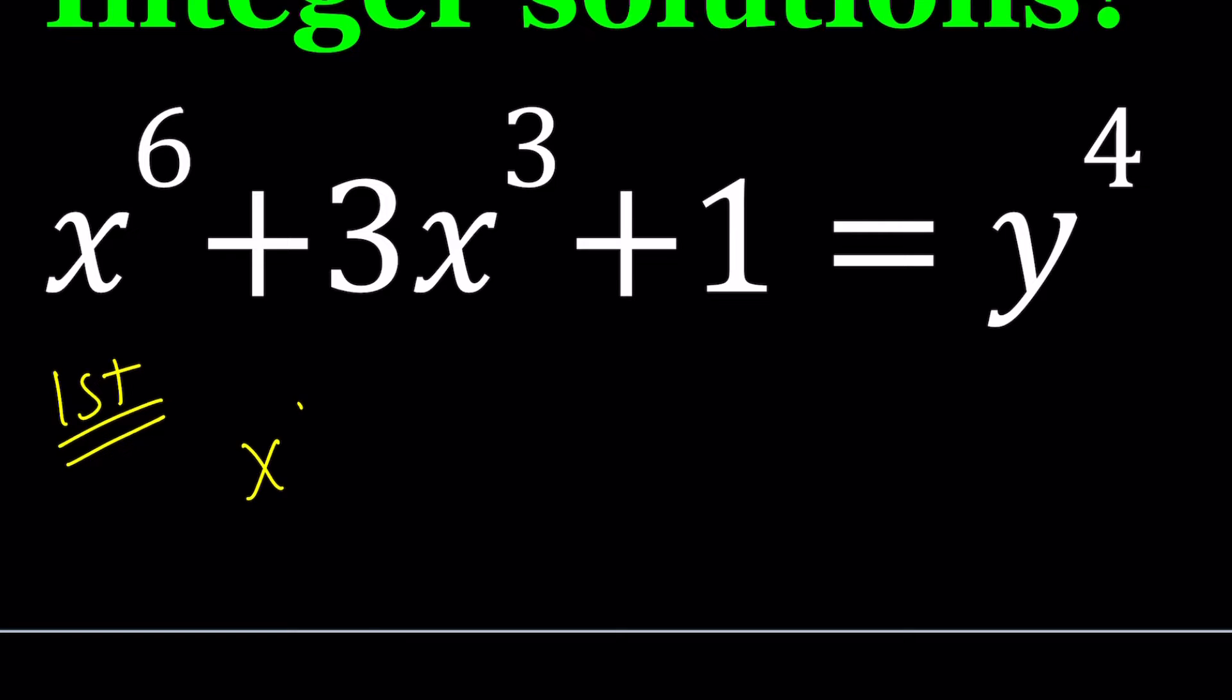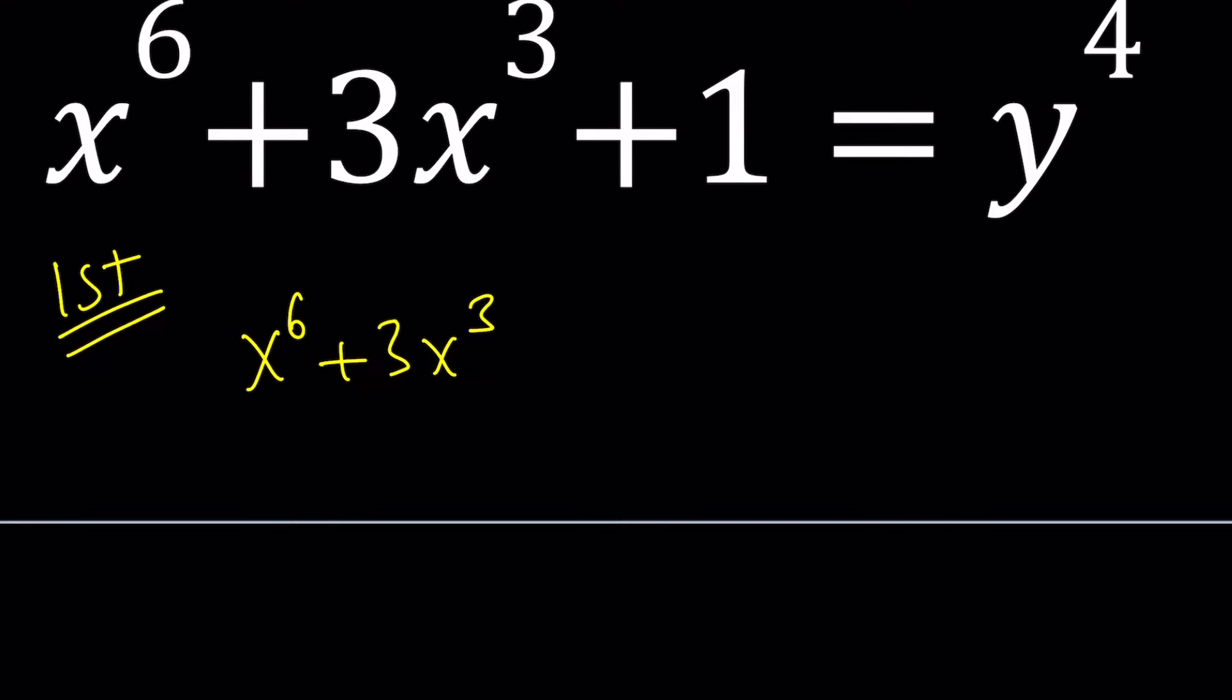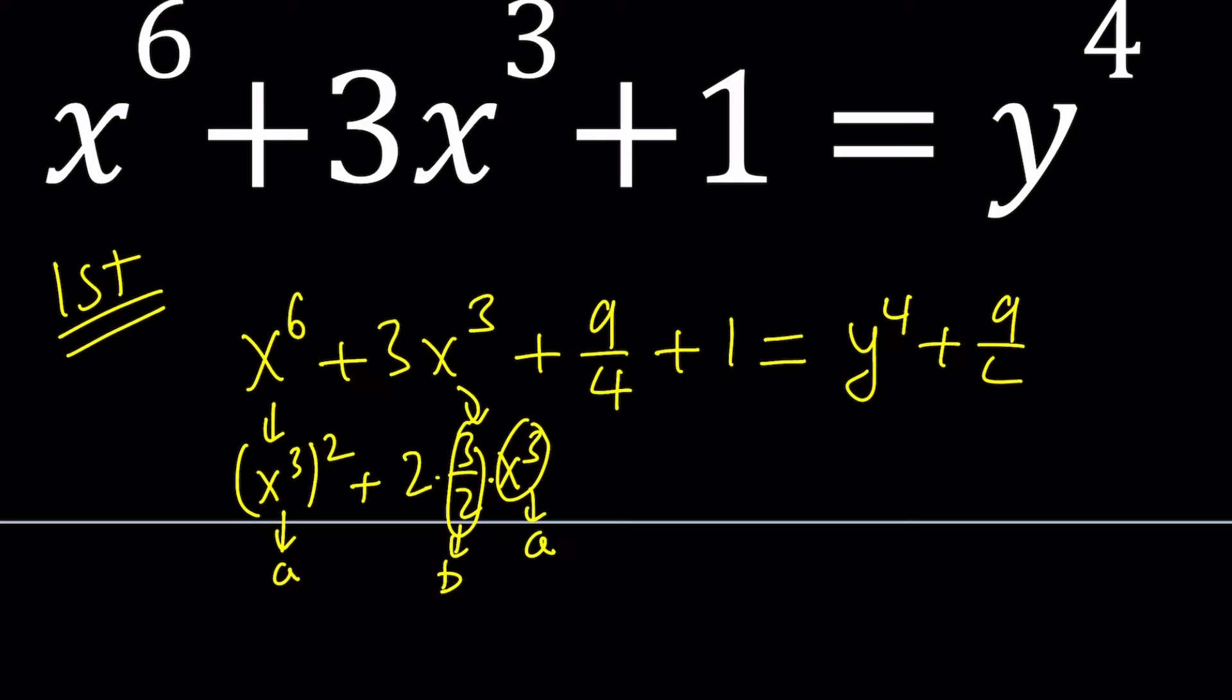So the question is, what should I add to these two things to make this a perfect square? So I'm thinking about it like this is x to the 3rd squared. So I do need 2ab. So 2 times 3 halves times x cubed is what's in the middle. So I basically need a squared plus 2ab plus b squared. So this is my a, and this is my b. And what I need to have is b squared.